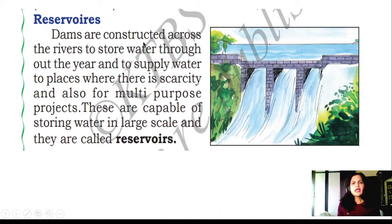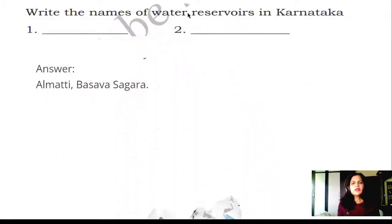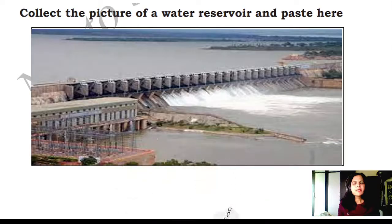Reservoirs: Dams are constructed across rivers to store water throughout the year and to supply water to places where there is scarcity and also for multi-purpose projects. These are capable of storing water on a large scale and they are called reservoirs. Write the names of water reservoirs in Karnataka. Answer: Almatti Basava Sagara. Select a picture of a water reservoir and paste here.